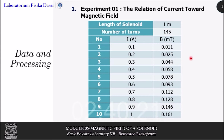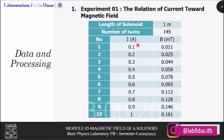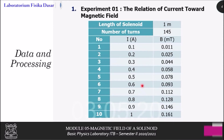Next is the data and processing, starting with experiment 1: the relation of current toward the magnetic field. In this experiment, the length of the solenoid is fixed to 1 meter, in which the solenoid has 145 turns. We variate the current flowing through the solenoid from 0.1 amperes to 1 ampere, each with an interval of 0.1 amperes, so that we have 10 variations. For each variation, we measure the magnetic field at the center of the solenoid, so we will have the entire data given in this table.